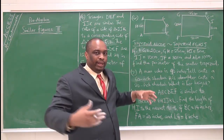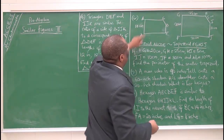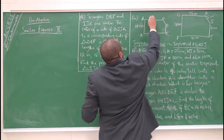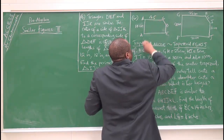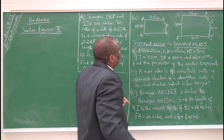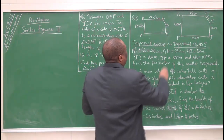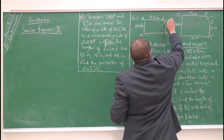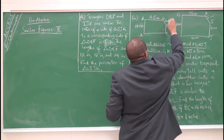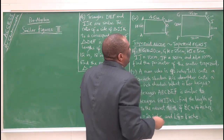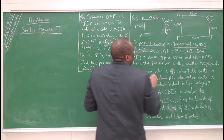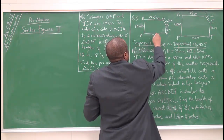So 25 divided by 2 gives us 12.5 centimeters. 5 divided by 2 gives us 2.5 centimeters. 10 divided by 2 gives us 5 centimeters, and 30 divided by 2 gives us 15 centimeters.